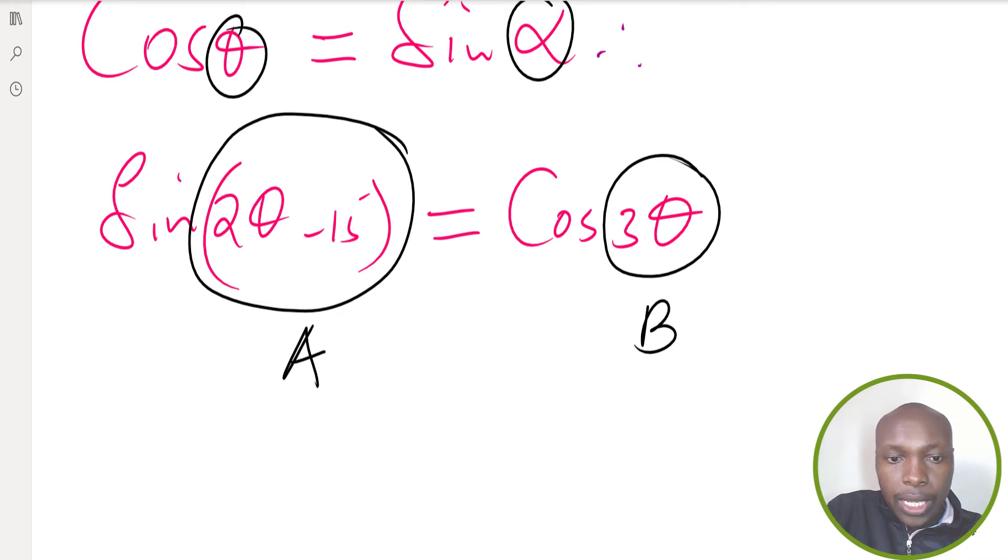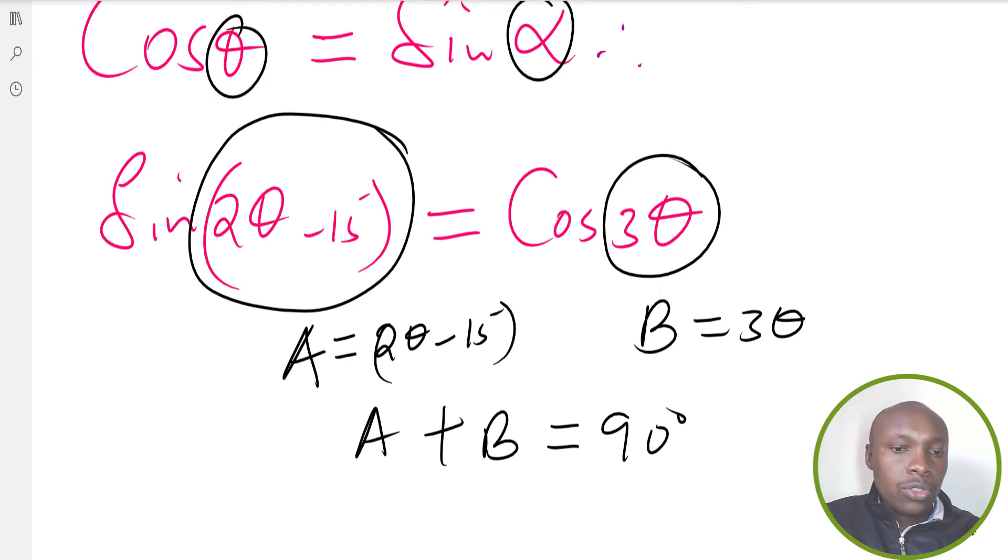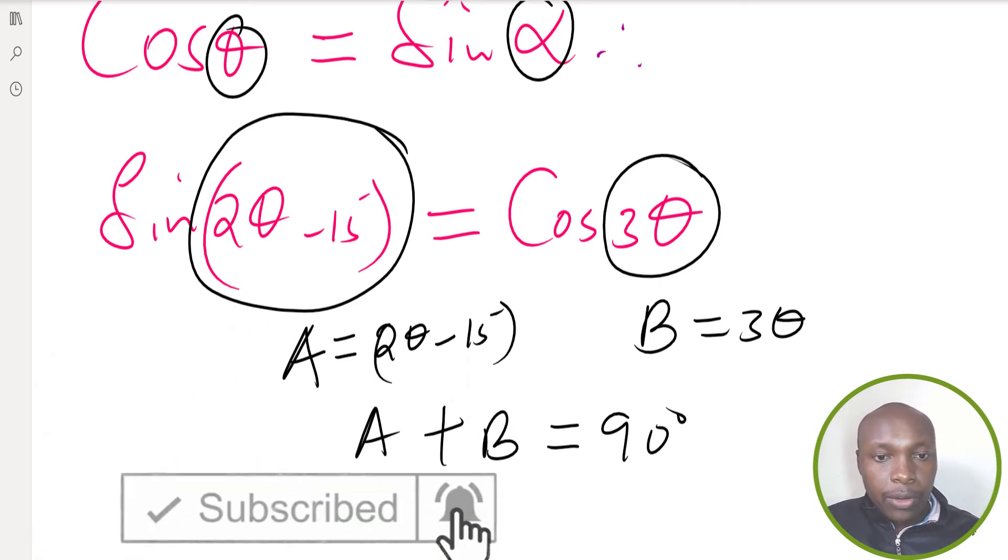When I add A plus B, this should give 90 degrees. In this case, A is 2θ minus 15, and then B is 3θ. Those two angles should be complementary; when you add them, you should get 90 degrees.